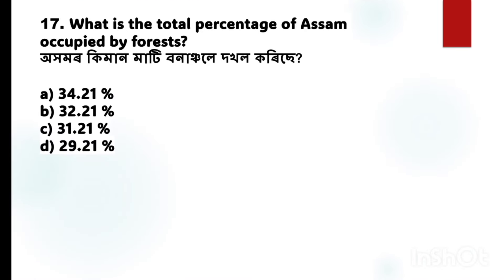Next question number 17: What is the total percentage of Assam occupied by forest? The correct answer is Option A: 34.21%.